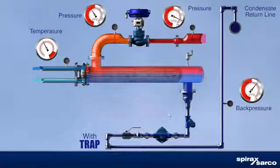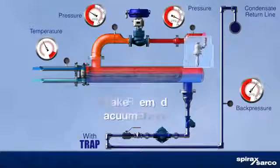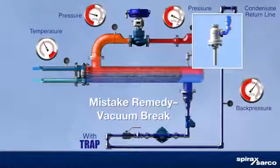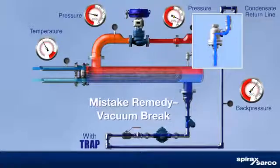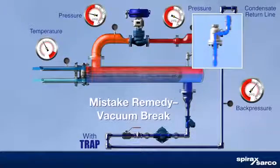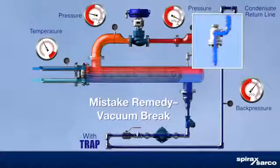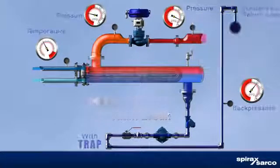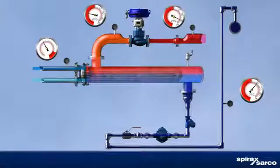Some operators address vacuum in the steam space by installing a vacuum breaker on the shell. This practice introduces atmospheric gases that dissolve readily into the cooler condensate. These dissolved gases form corrosives that attack wetted surfaces, while doing nothing to eliminate the stall condition.